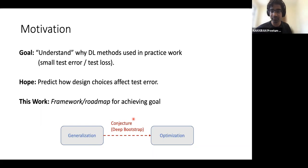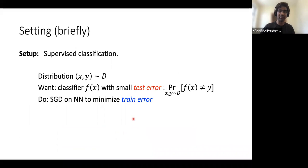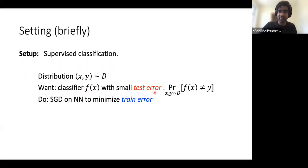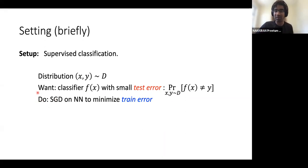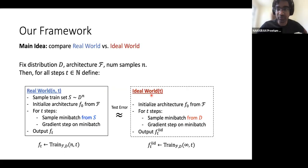The setting we consider is supervised classification. We have some distribution D on inputs x and labels y — image classification for example — and we want to find a classifier f with small test error on the distribution. What we actually do is sample a train set from this distribution and run SGD on a neural network to minimize the train error. The whole question is: why does minimizing the train error give us a model with small test error?